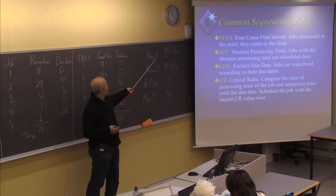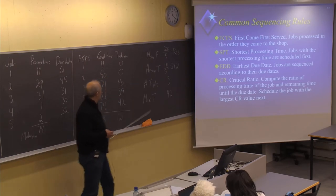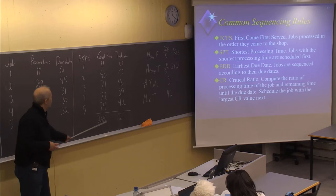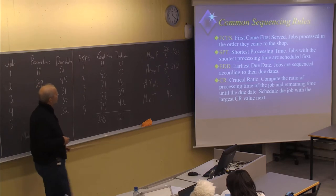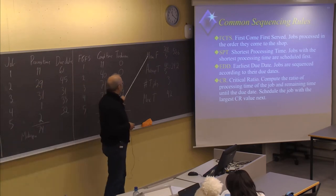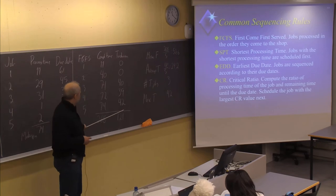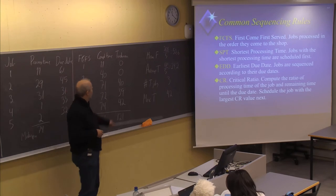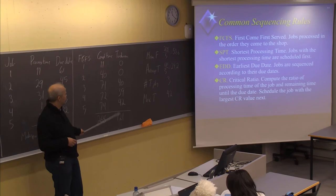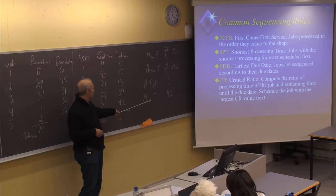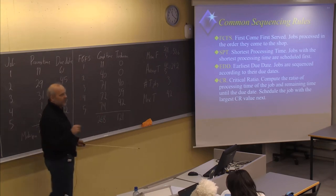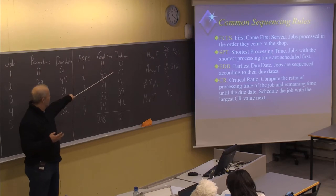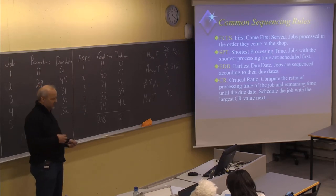One is the mean flow time, the average of the sum of the flow times. Another one is the average tardiness, the average number of days delayed divided over all the jobs. Then the number of tardy jobs, which is three in this case. And maximum tardiness — the number of days the most delayed job is late — which is 42 in this case.